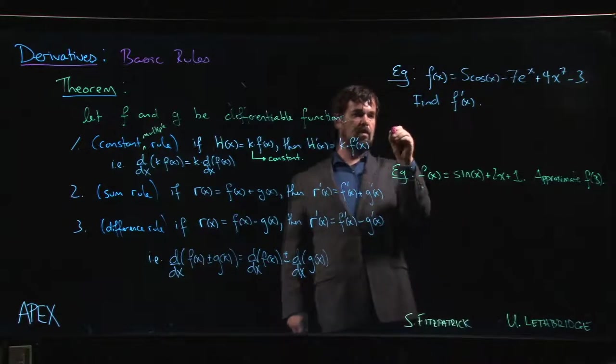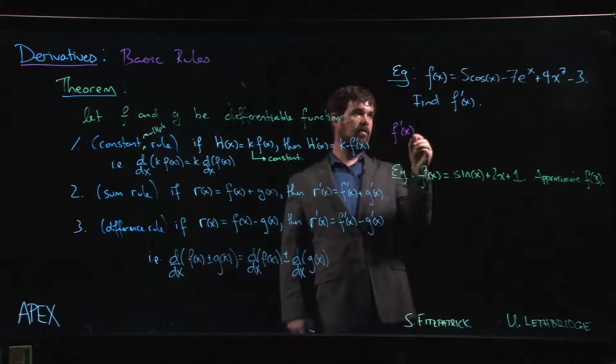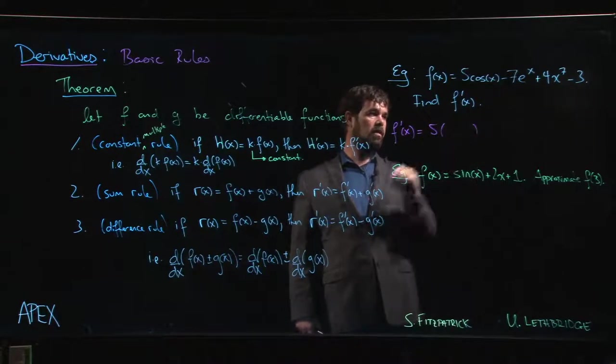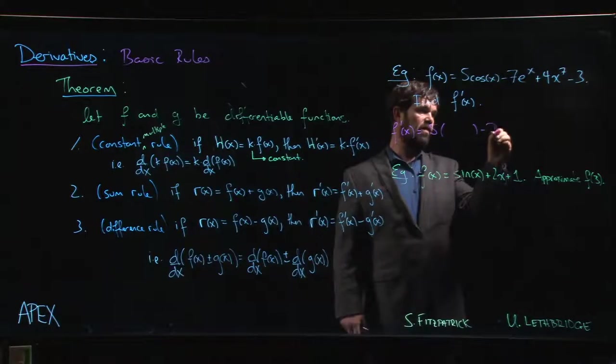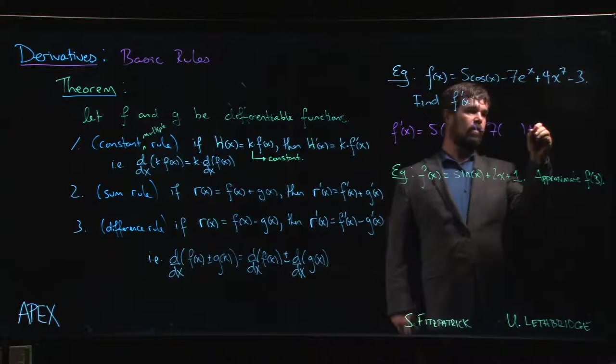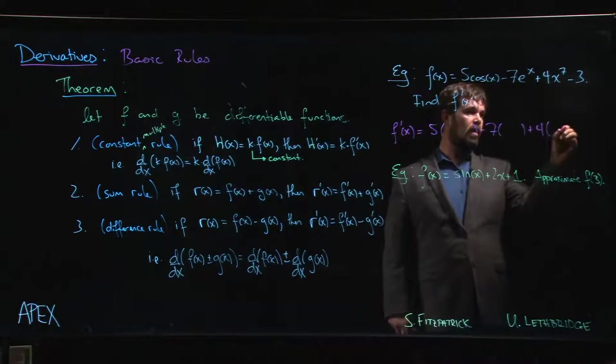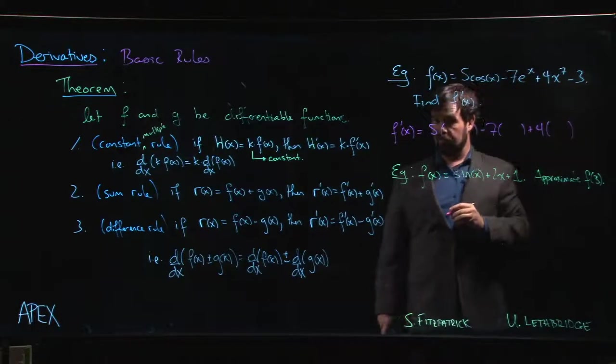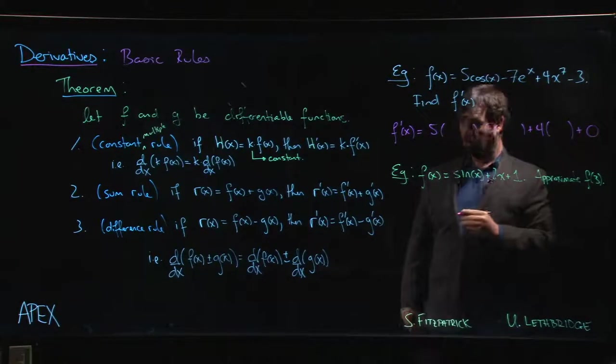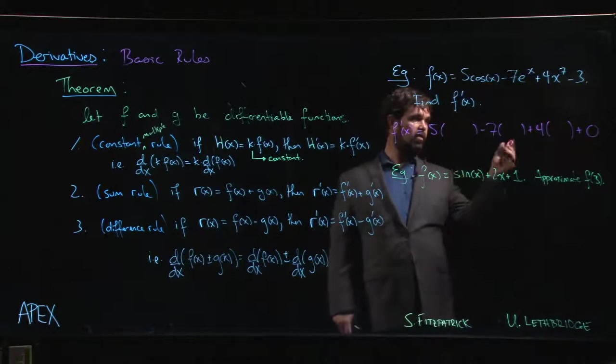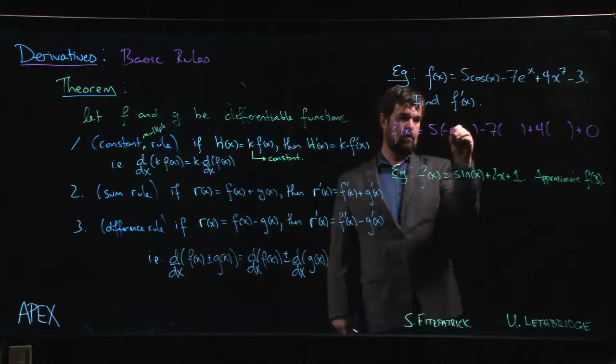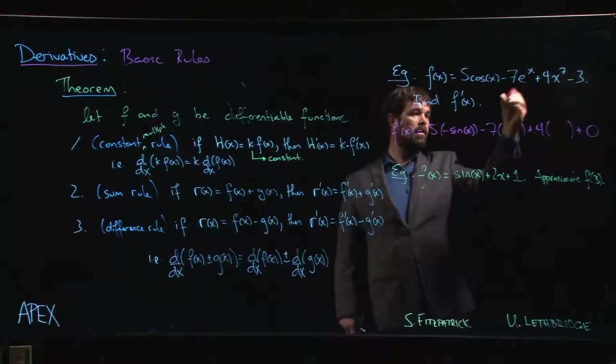So what you should really do is say f prime of x is five times, so in here we're going to put the derivative of cosine, minus seven times, and in here we're going to put the derivative of e to the x, plus four times, and in here we're going to put the derivative of x to the seven. And finally, well we have a constant at the end and we know that the derivative of any constant gives us zero.